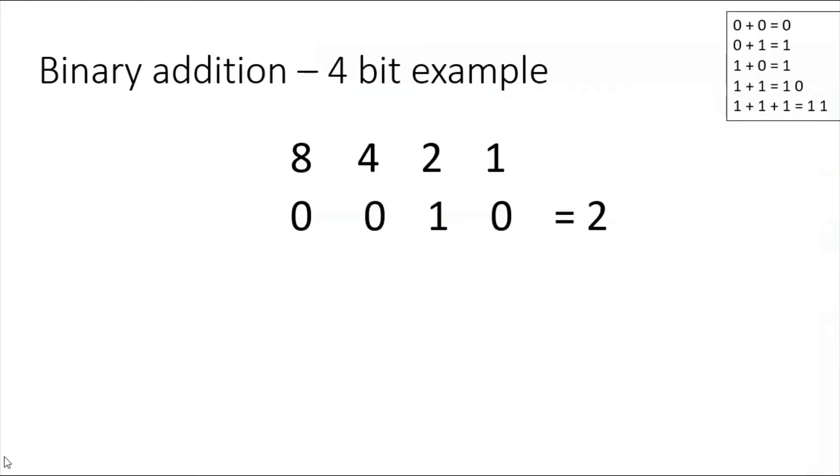Here's an example using four bits. I'm adding up the number two to the number five and I should come out with a number seven. What I've done, if you look in the top right corner, I've placed my rules—I've written out my rules so I remember what I'm doing as I'm doing my addition here.